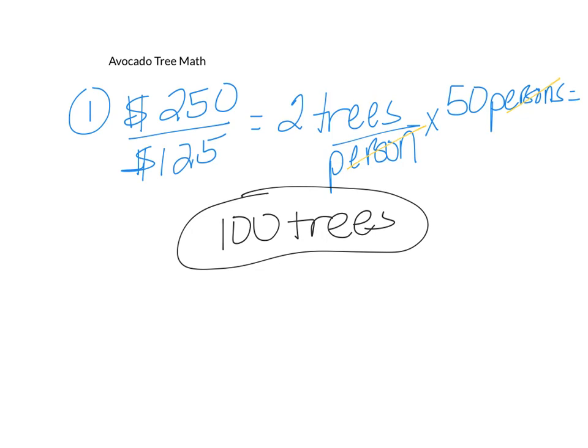And so 2 times 50 is equal to 100 trees. You'll also notice here that the dollar signs had canceled and that the persons had canceled. And so the only unit we're left with is trees. And that's great because that's what number one was asking.